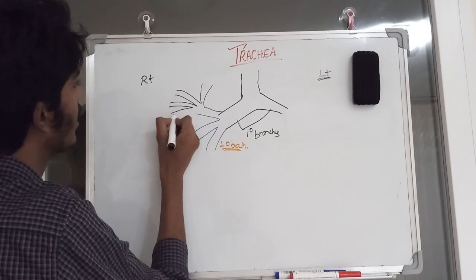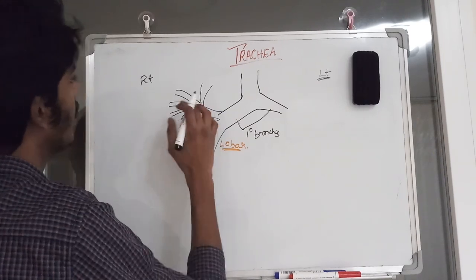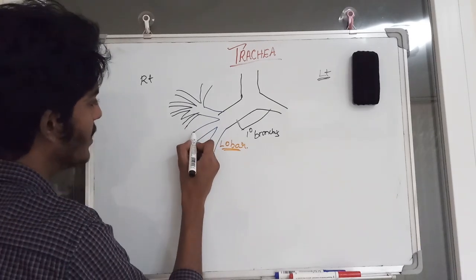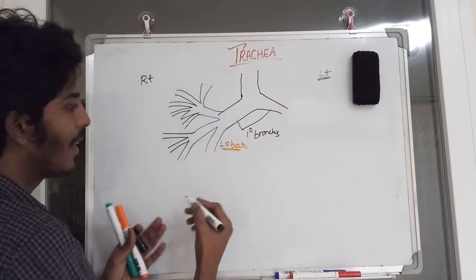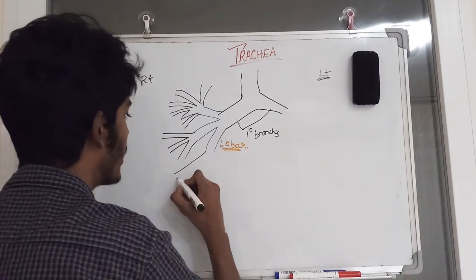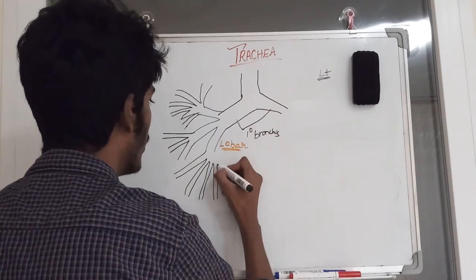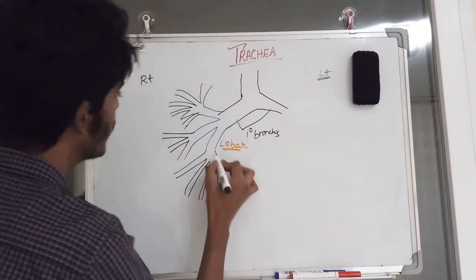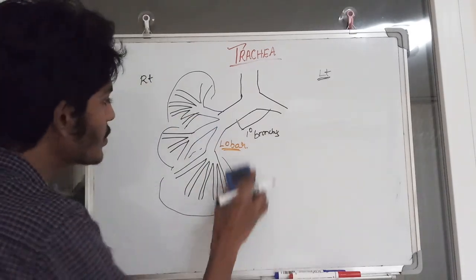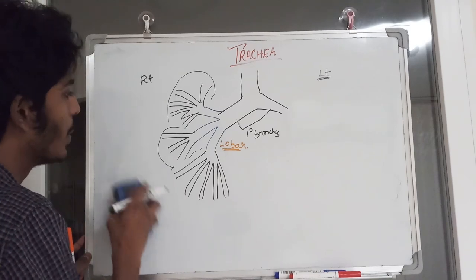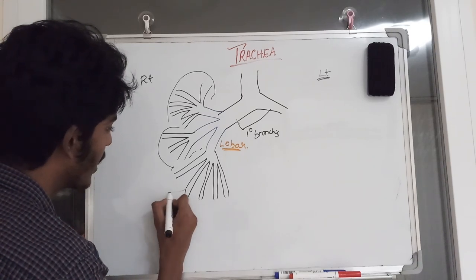The right middle lobe has three segments, giving rise to three segmental bronchi. The right lower lobe has five segments, giving rise to five segmental bronchi.